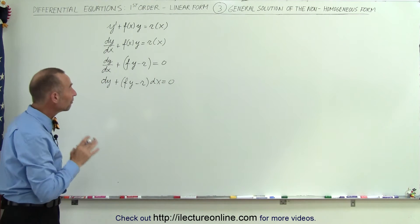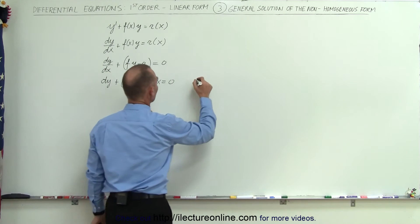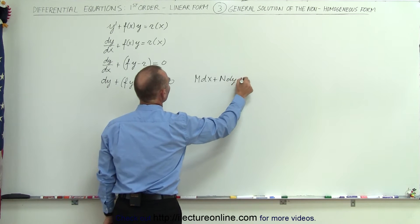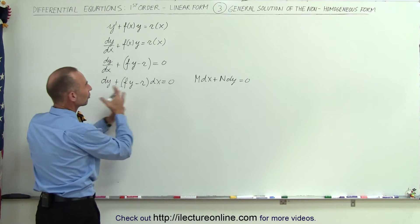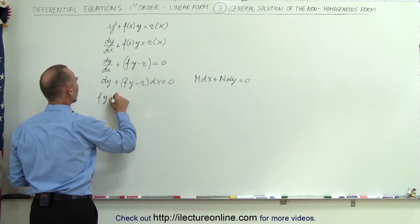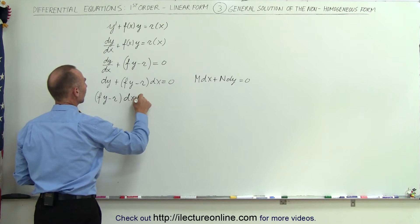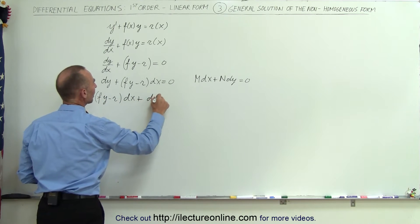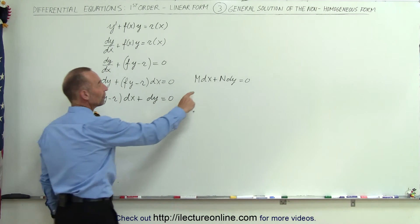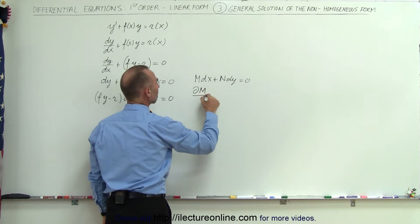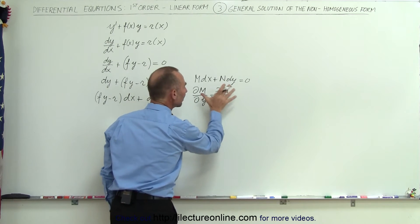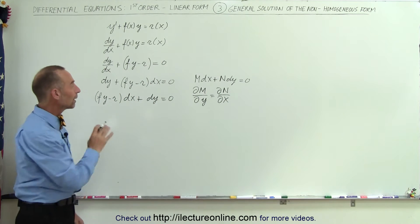Now this should look very familiar — it looks a lot like M times dx plus N times dy is equal to 0. Reversing the order of terms, we can write this as (f·y minus r) dx plus dy is equal to 0. We know we can find the solution when the partial of M with respect to y equals the partial of N with respect to x. Then the equation is exact and we'll be able to find the solution.